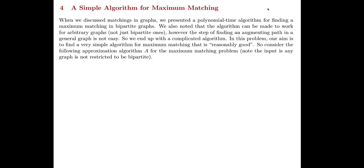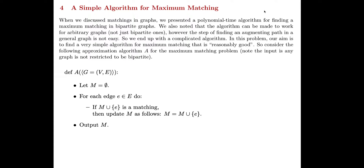Question 4: a simple algorithm for maximum matching. The problem states that finding a maximum matching can be computationally heavy, so we consider an approximation algorithm. The algorithm presented starts with an empty matching, then traverses all edges in some fixed order, adding each edge to the matching if possible and skipping it otherwise. This is essentially a greedy algorithm, locally taking in as many edges as it can.